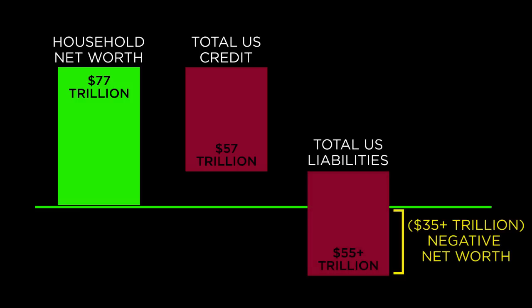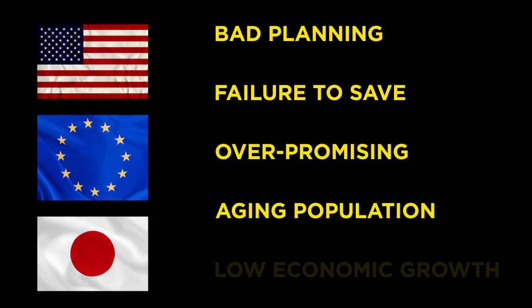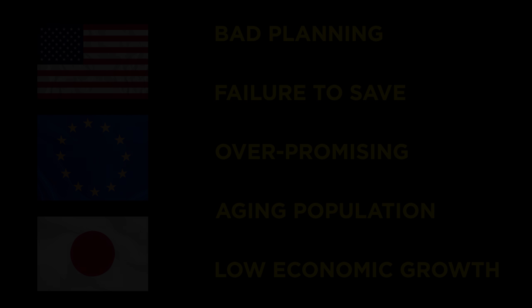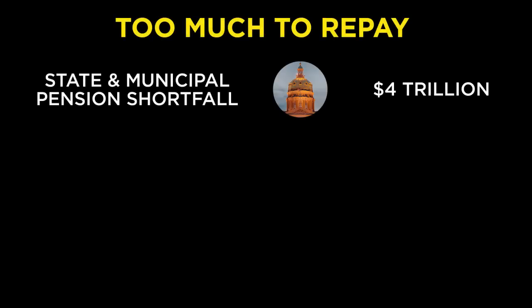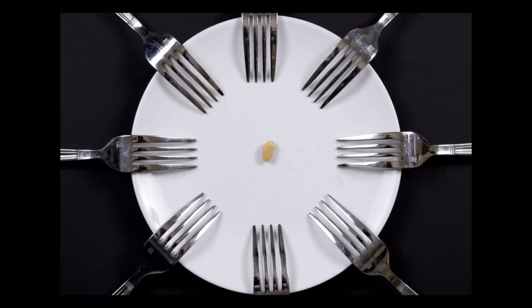When we include those liabilities, the picture turns quite negative. Japan and Europe are in similar situations, driven by a poor combination of bad planning, failing to save, promising too much, aging demographics, and low economic growth ever since the year 2000. Because the liabilities are so large, you can count on them never being fully honored. But just because we write a liability off does not mean it goes away — by giving retirees less, they or their families have to shoulder the burden of living within their means, something our government still refuses to do. To really understand why the future liabilities of so many developed countries are massive and growing larger, we need to explore the topic of demographics.